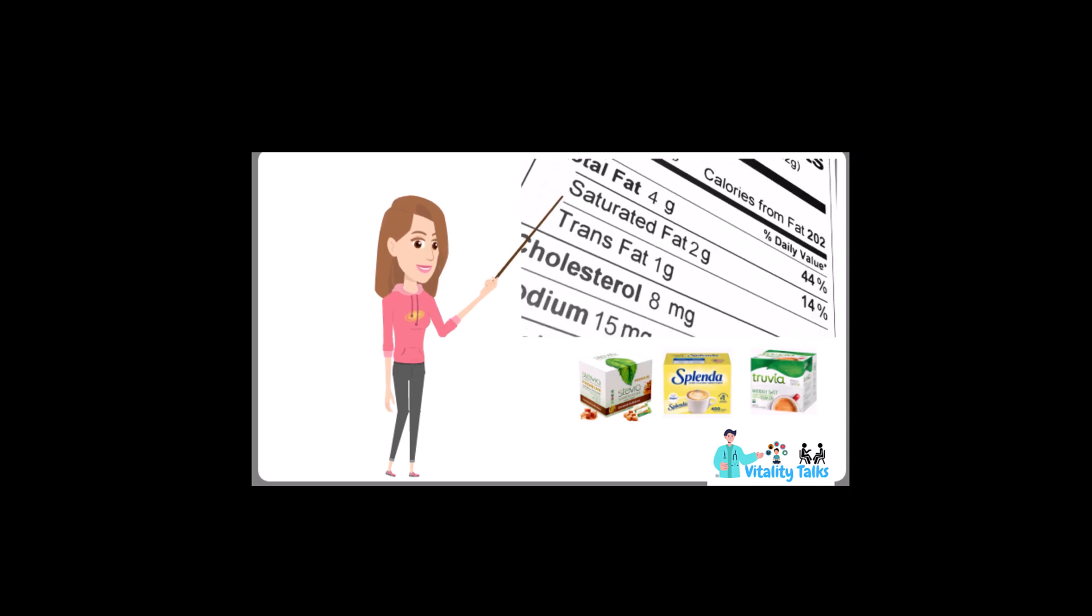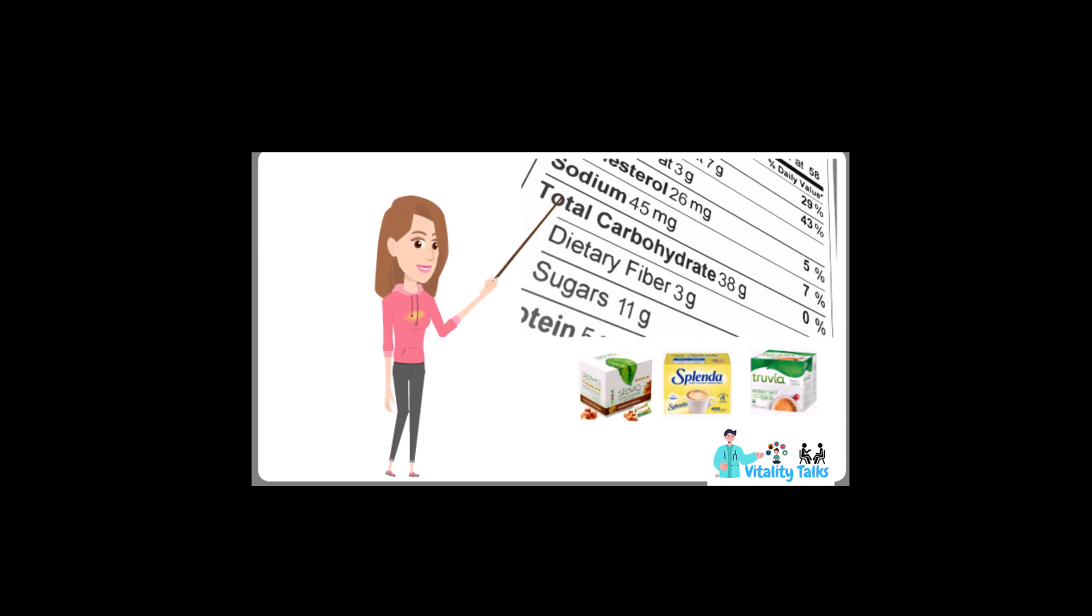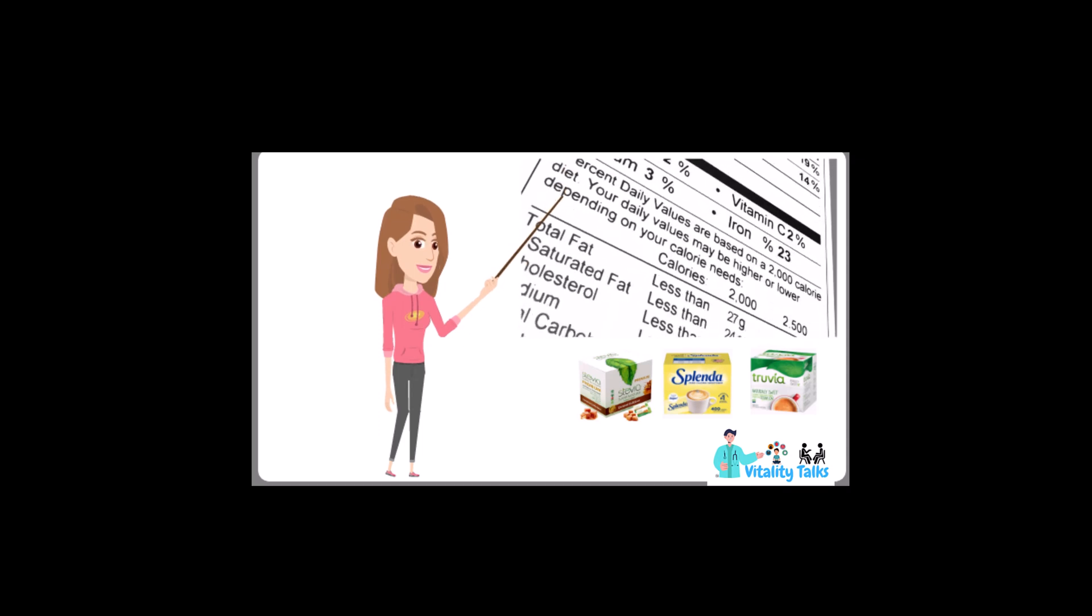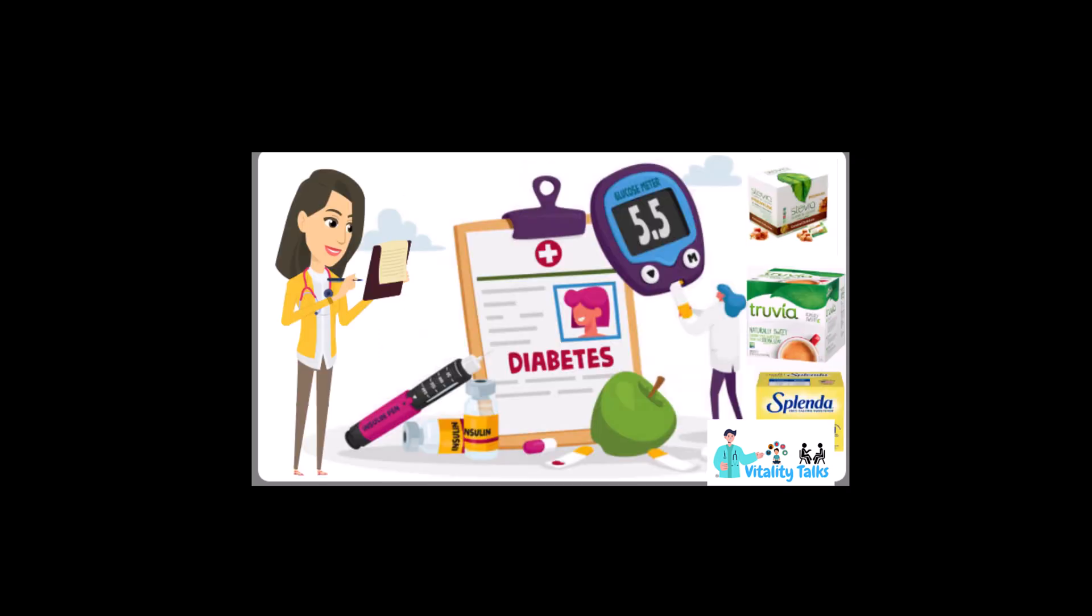When it comes to availability and price, Stevia is widely available in supermarkets and health food stores and is moderately priced. Truvia is less widely available and can be more expensive than other sweeteners. Splenda is widely available in supermarkets and is moderately priced.